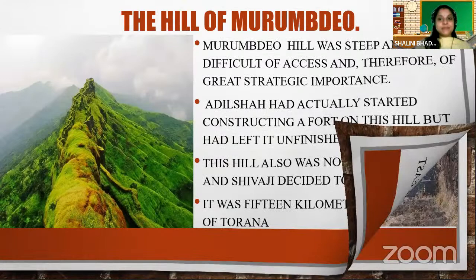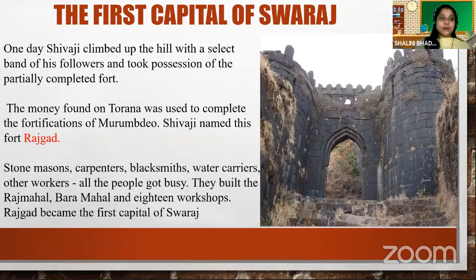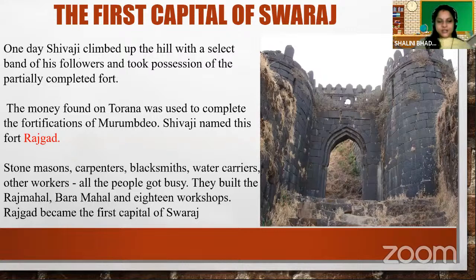This became the capital of Swaraj. One day, Shivaji climbed up the hill with a select band of followers and took possession of the partially completed fort. The money found at Torana was used to complete the fortification of Murumdev, and Shivaji named this fort Rajgad. Stonemasons, carpenters, blacksmiths, water carriers and all the workers got very busy in the building of this fortification. They built the Rajmahal, the Bara Mahal, and 18 workshops. Rajgad became the first capital of Swaraj.